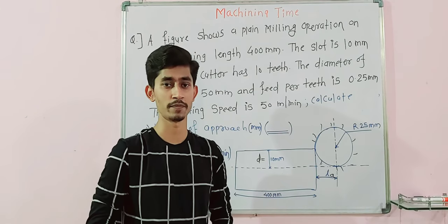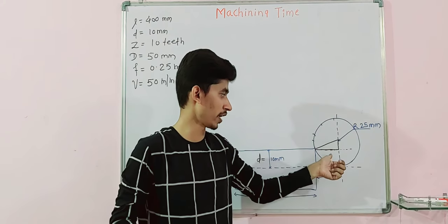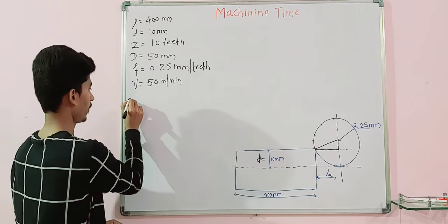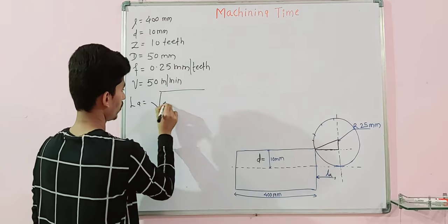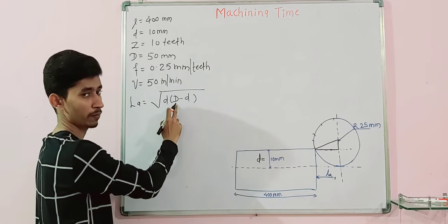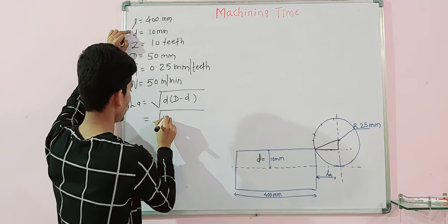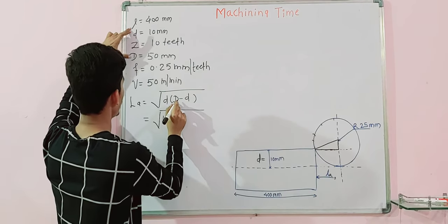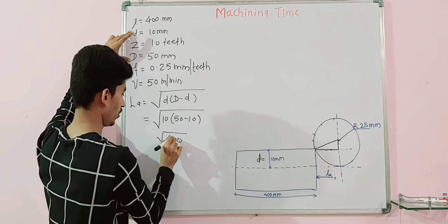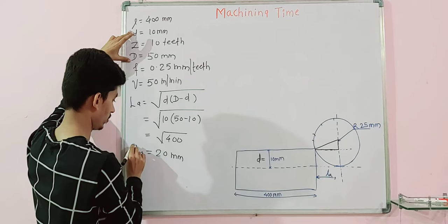Let's calculate the solution for the length of approach. From the figure itself we can calculate it, and by the regular formula we can also calculate. The formula for length of approach is: under root of d times (D minus d), where d is the depth of cut and D is the diameter of the cutter. The diameter is 50 mm, so this gives under root of 400, which is 20 mm. That is the length of approach — this is your first answer.